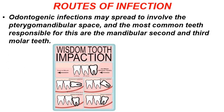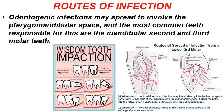Sources of infection for the pterygomandibular space: odontogenic infections most commonly involve the mandibular second and third molar teeth, and more specifically the third molar — particularly if mesoangularly or horizontally impacted. In the axial section, if the roots are deflected lingually, infection can reach the pterygomandibular space directly as a primary space. Or if there is involvement of the buccal space or other primary spaces, it will eventually reach the pterygomandibular space as a secondary space.